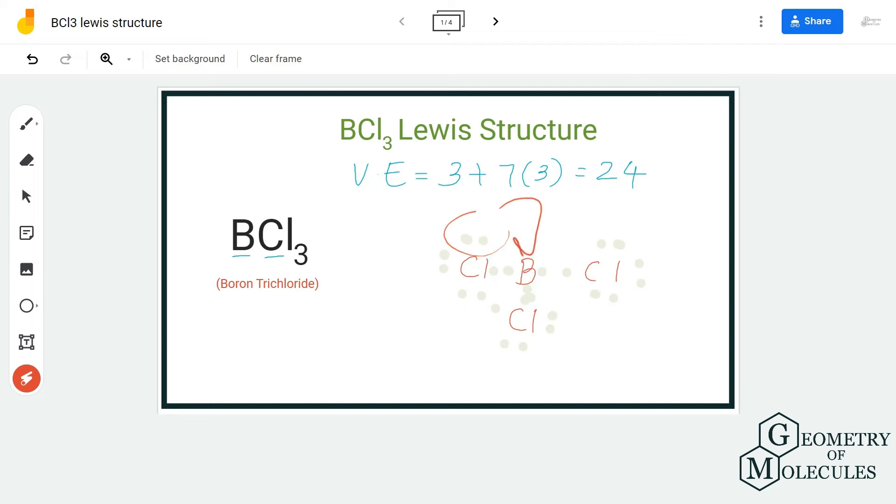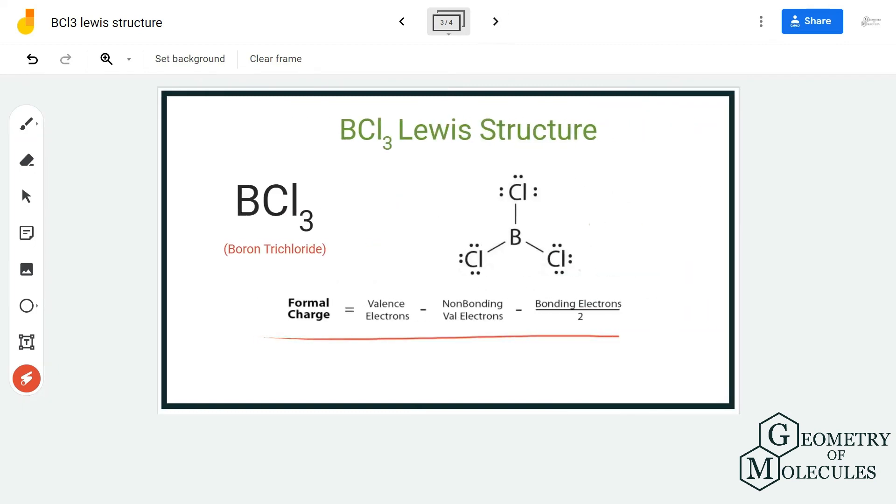You can even try that by shifting this electron, and you can then use this formula to calculate the formal charges. Whereas, if you calculate the formal charges for this structure in which there are single bonds between all chlorine and boron atoms, the formal charges will be zero for both boron and chlorine atoms.